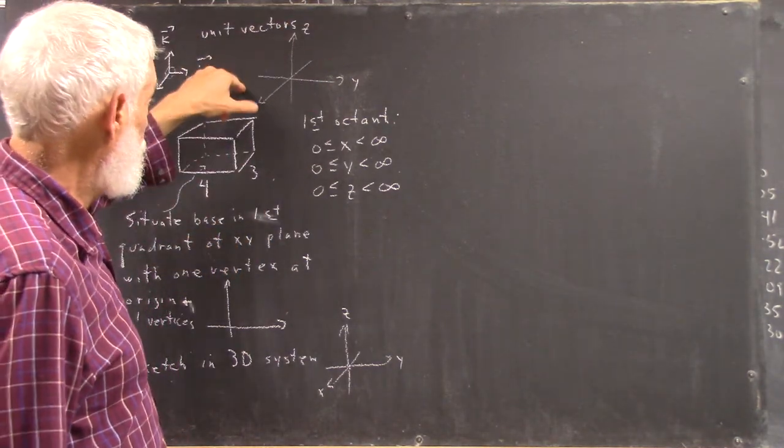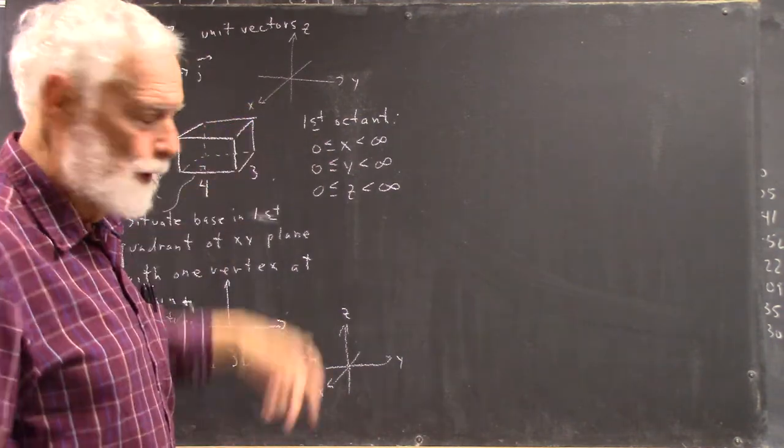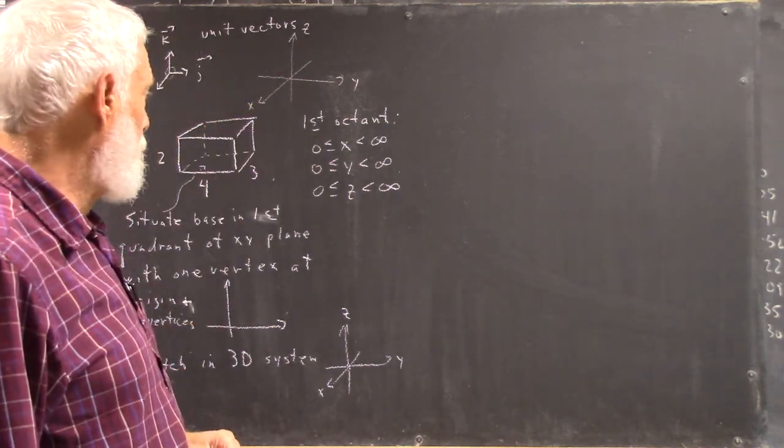Then you have second, third, fourth octants, and then below the plane you got the fifth, sixth, seventh, and eighth. I think that's the way they're numbered. I usually won't talk about them that way.